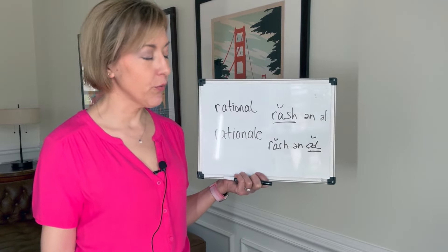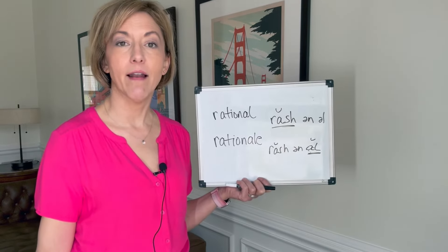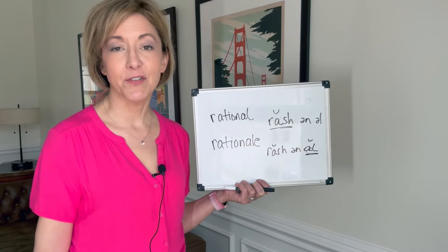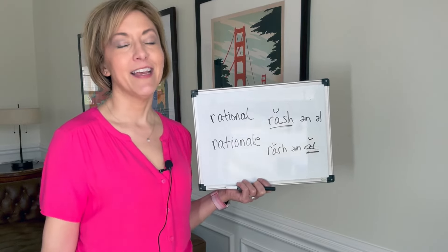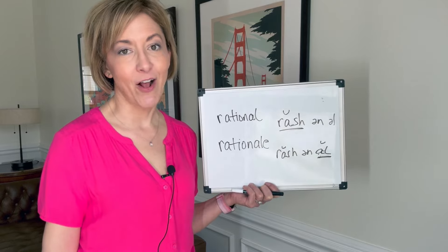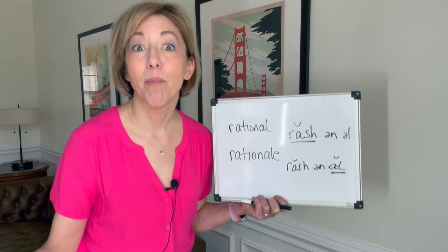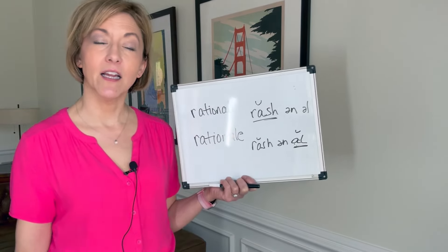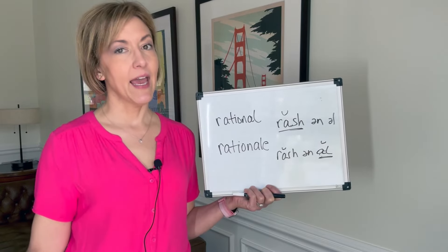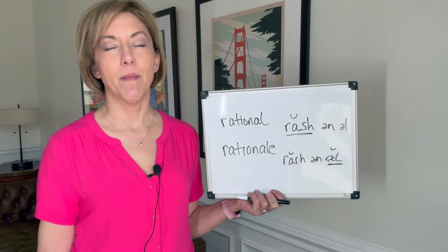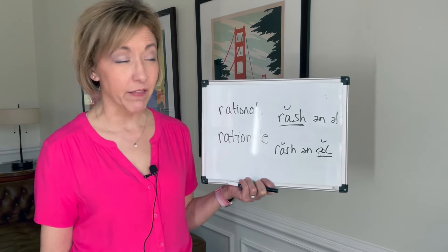Syllable two is the same in both words — we're going to say 'un,' that schwa sound. The mouth is just open and relaxed, and then the 'n': tip of the tongue touches the spot where the teeth and the skin on the roof of the mouth meet. For the ending, both words end in an L — tip of the tongue touches that same spot. Make sure you hold that L a little bit longer by keeping that tongue there.